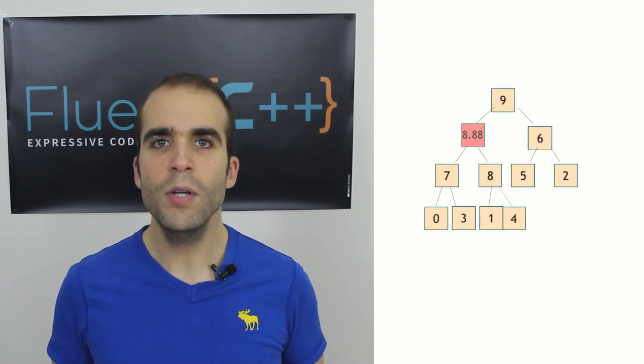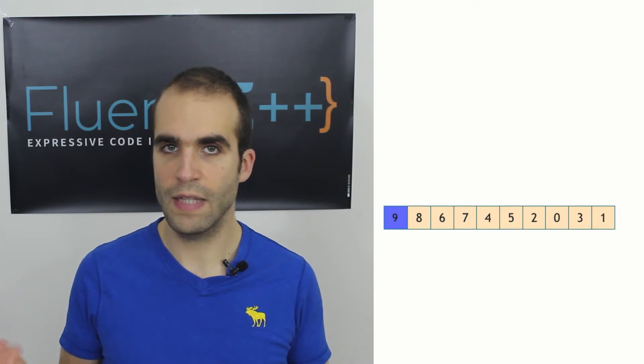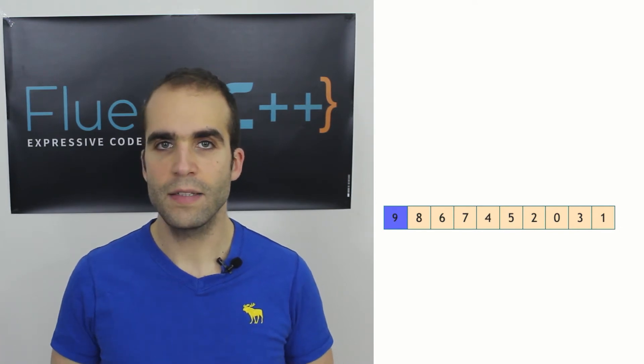So how do we remove an element from the heap? Well actually we can only remove one element, which is the top, the largest element of the heap, and to do that we're going to use pop_heap. So how does std::pop_heap work?